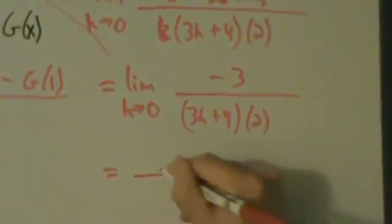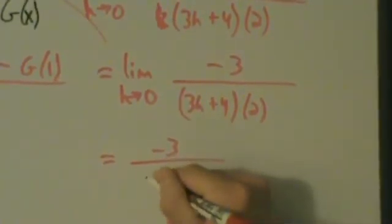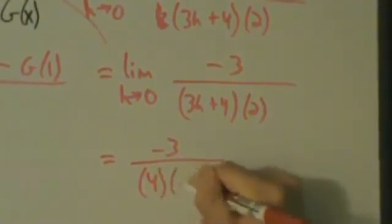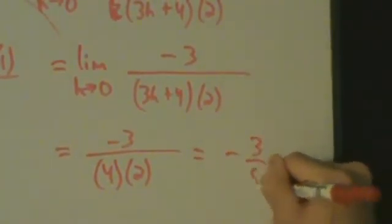We get -3 over 3·0, 3·0 + 4, which is just 4, times 2. In other words, -3/8. Okay.